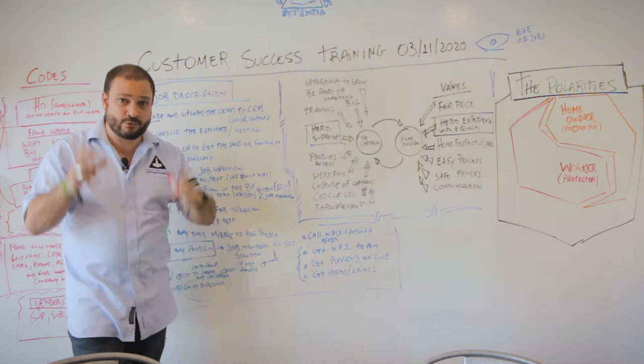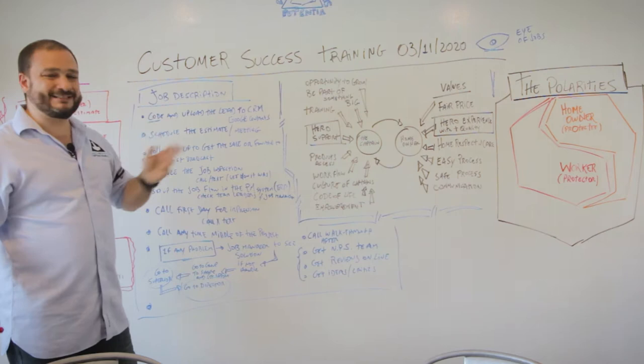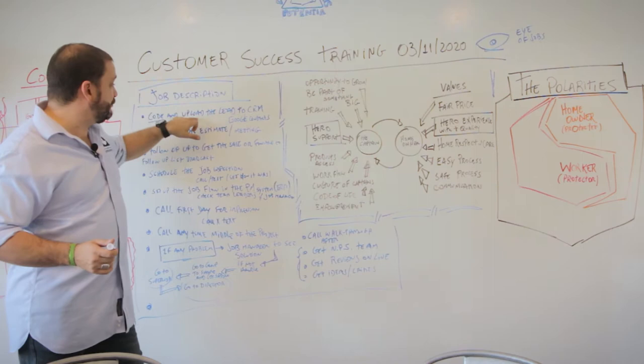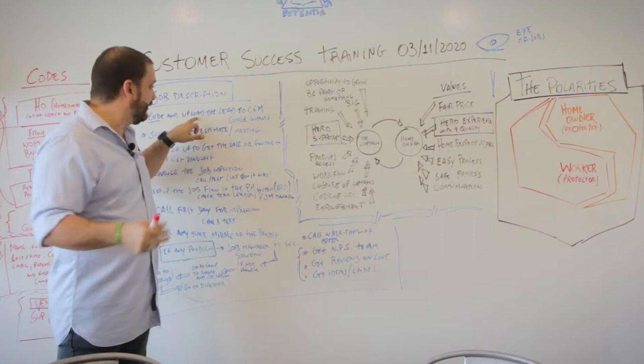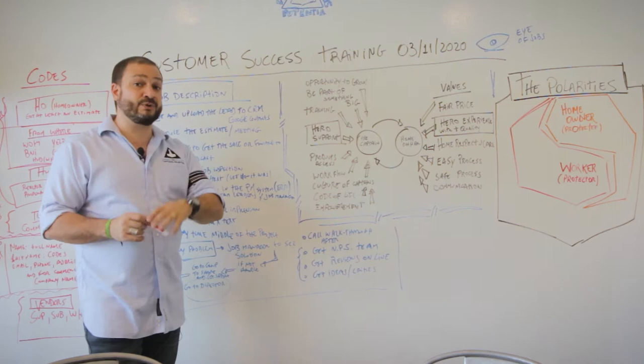One of the first things we're going to do on the job is create a code for the lead, for the protectee, for the homeowner, or for the potential client. I'm going to train you on this in the next part of the training. You have to upload this customer in our CRM. Right now we are still growing, so we're still using Google Contacts, so you have to put them in your Google Contacts with the codes I'm going to teach you in the next part of the training.